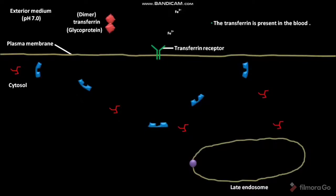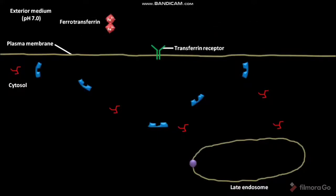The two Fe3+ ions, or ferric ions, bind to the transferrin. The transferrin bound to the two ferric ions is called ferrotransferrin. The ferrotransferrin then binds to the transferrin receptor on the plasma membrane.